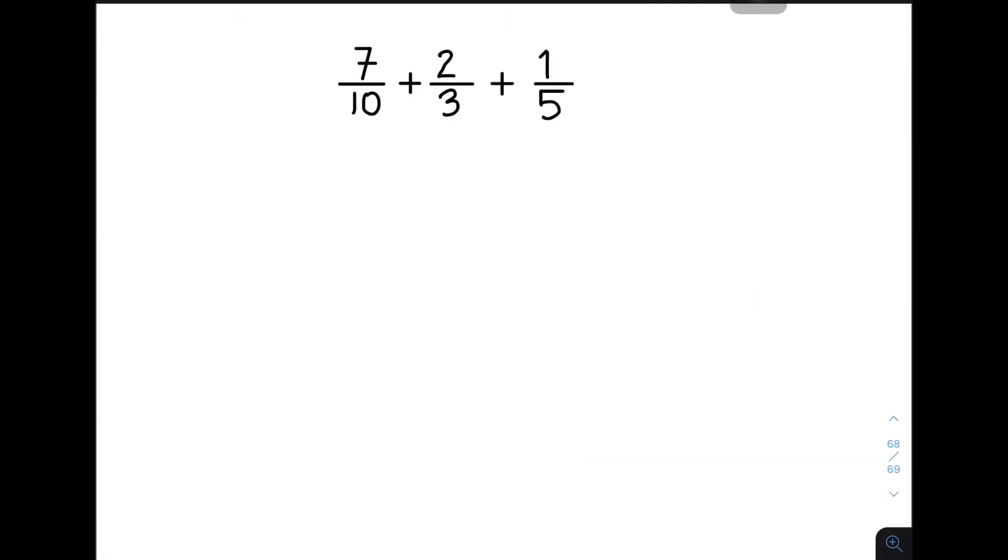Now, for item number 2, we are given 7 over 10 plus 2 over 3 plus 1 over 5. Now, again, these fractions are examples of dissimilar fractions because they have different denominators. So first thing you need to do is to find the least common multiple of 10, 3, and 5.